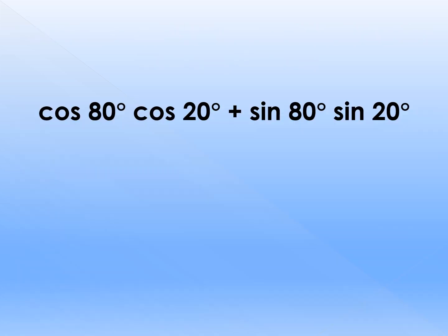Let's try an example. We have cos80·cos20 plus sin80·sin20. Since it follows the pattern cos, cos, sin, sin, we have cosine. Since the operation is plus, we're going to subtract a and b. Our a is 80 and our b is 20. 80 minus 20 is 60. Therefore, this is equal to cos60 degrees, which equals 1/2.